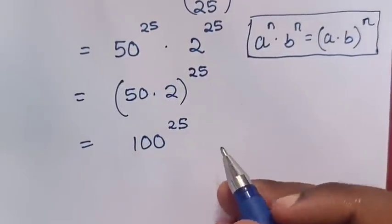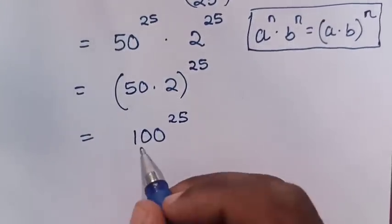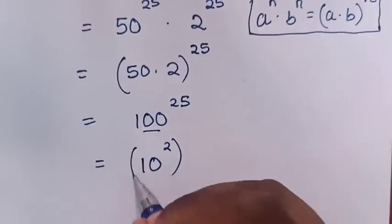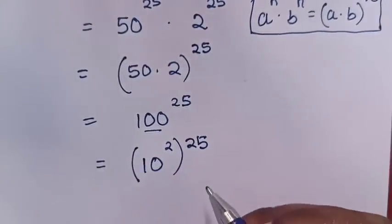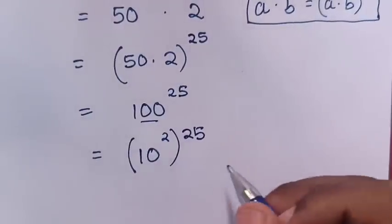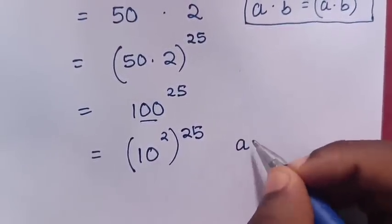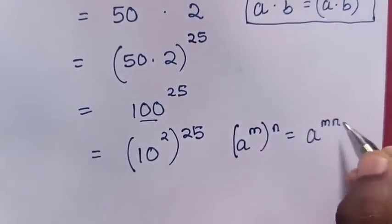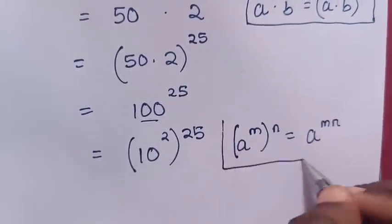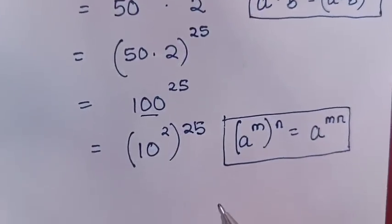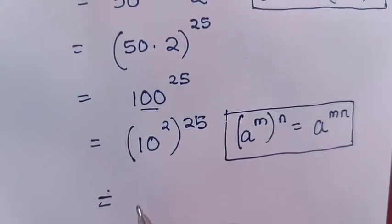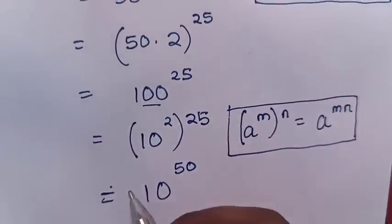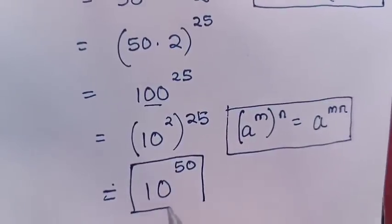Now from here, 100 is the same as 10 squared, then bracket power of 25. We apply the exponential rule that a power of m, bracket power of n, equals a power of m times n — so we multiply the powers. Here in our expression it will be equal to 10, and 2 times 25 is power of 50. So this is the final answer: 10 power of 50.